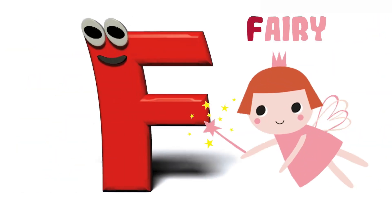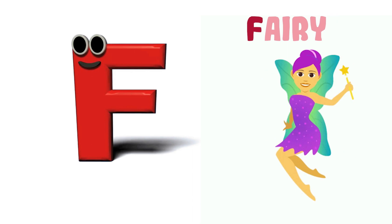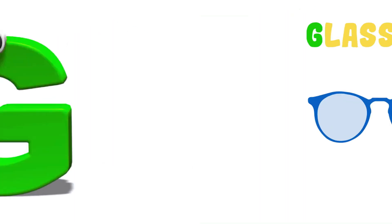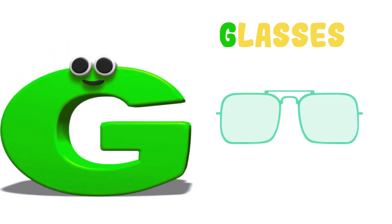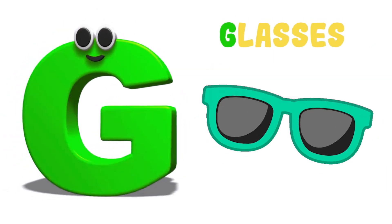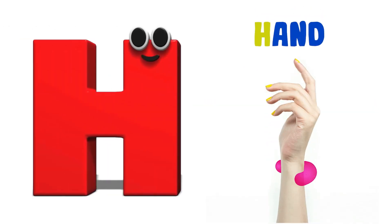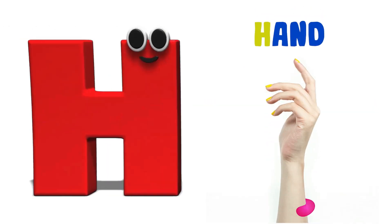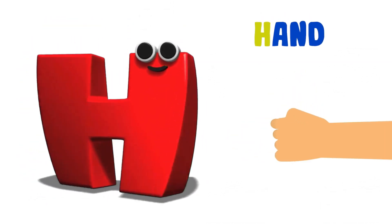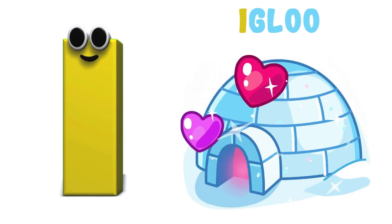F is for Fairy, F-F-Fairy, F-Fairy. G is for Glasses, G-G-Glasses, G-Glasses. H is for Hand, H-H-Hand, H-Hand. I is for Igloo, I-I-Igloo, I-Igloo.